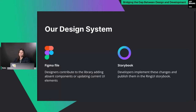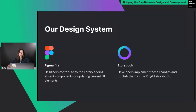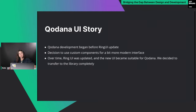Our approach to using the design system is pretty common: we have a Figma file with atomic elements and bigger components, and a Storybook with developed React components. We design new components in Figma and developers implement them in Storybook or change styles of old components. The library is about 8 years old and started as a Sketch file with a limited number of components, but is now a huge Figma file with many components, states, and variants.